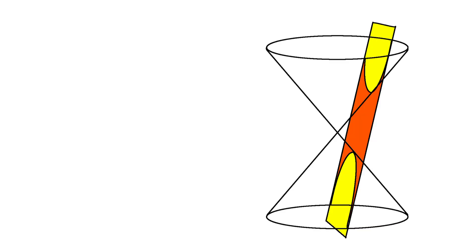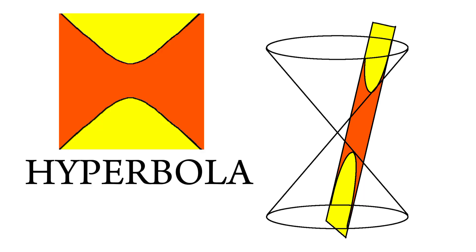But once you intersect the plane such that the slope of the plane is greater than the slope of the cone, the plane intersects on both of the cones, producing a curve known as hyperbola. This curve has an eccentricity greater than one.